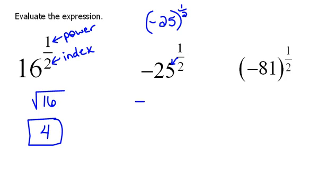So this literally is the same thing as saying the negative or the opposite square root, because the denominator is the index, 25 to the 1st power. And now we can see that the square root of 25 is 5, and then we do the opposite of that. That would be -5.